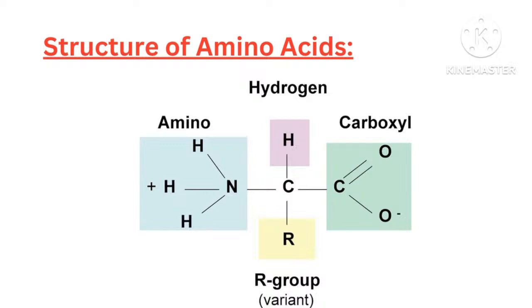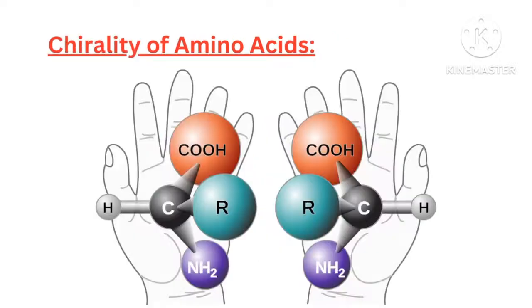Side chain (R group) variability. The R group determines chemical properties including polarity, charge, hydrophobicity, structural role in proteins, and reactivity and interactions with other molecules. The side chain's properties form the basis for classifying amino acids — for example, non-polar, polar, acidic, and basic.